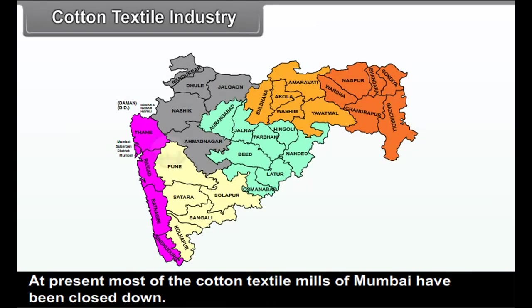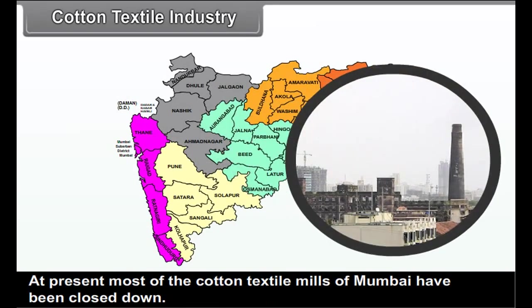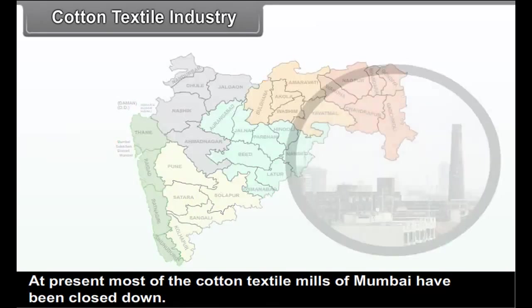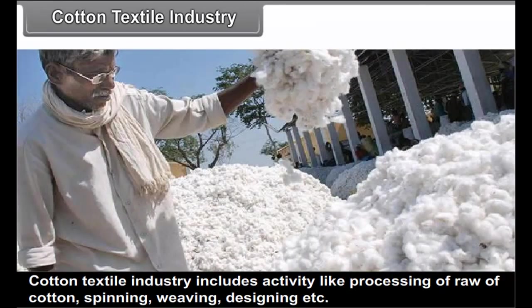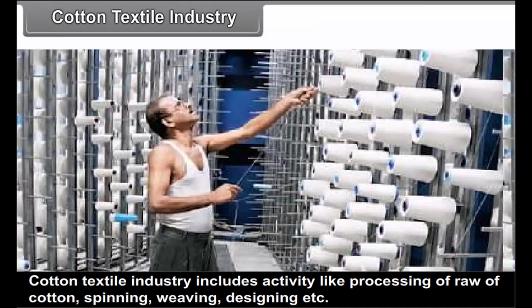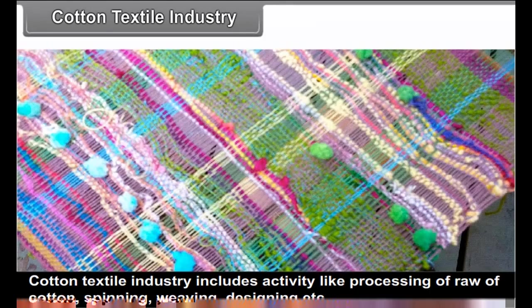At present, most of the cotton textile mills of Mumbai have been closed down. Cotton textile industry includes activities like processing of raw cotton, spinning, weaving, designing, etc.